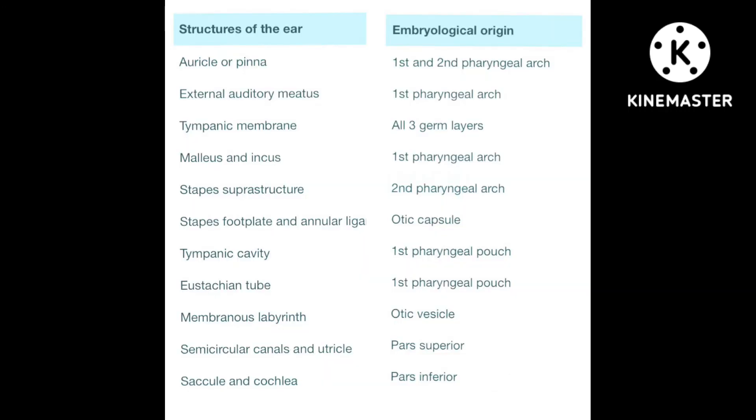Finally, here is the table showing all the structures of the ear and their embryological origin which I discussed previously with the mnemonics in the anatomical diagram. Just remember this table.